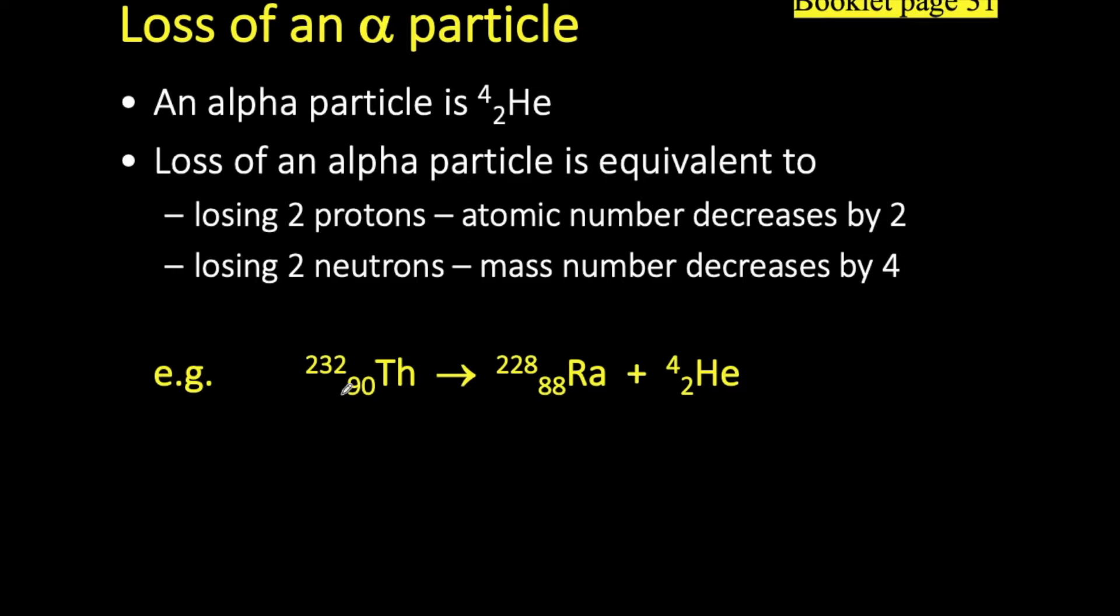We do the same for our atomic number. If it's 90 on the left, the total on the right must also be 90. 88 plus 2 gives us 90.